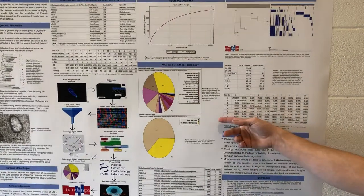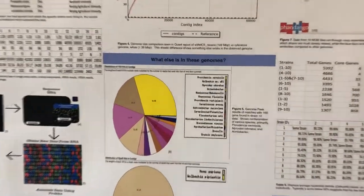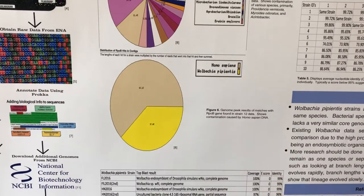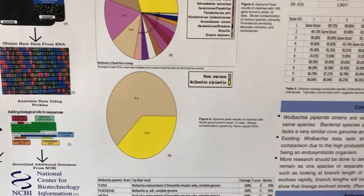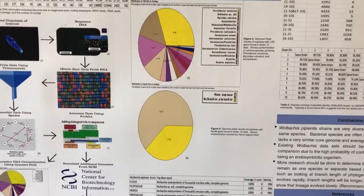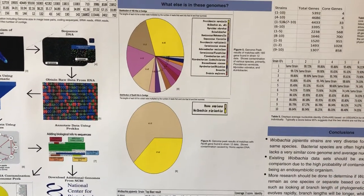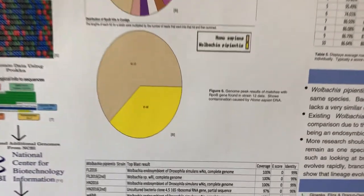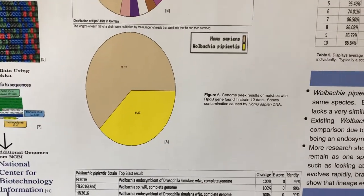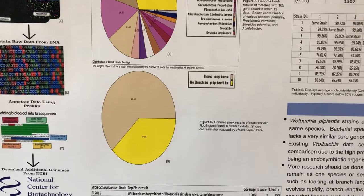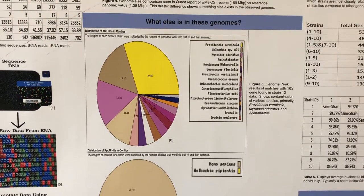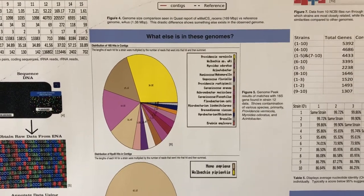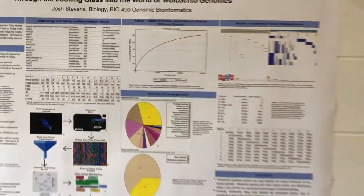We used GenomePeak to determine what other DNA could be present in the download. In Figure 6, there is Homo sapien DNA, which is likely from the researcher who was conducting the research project. And in Figure 5, there is an array of DNA from other bacteria and other food that their host might have been digesting.